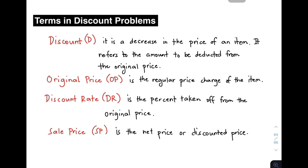Next, we also have discount rate, or DR. Discount rate is the percent taken off from the original price. Last, we have sale price or selling price, SP, which is the net price or discounted price. In the next part of our video, we will be talking about the problems and how to solve them.